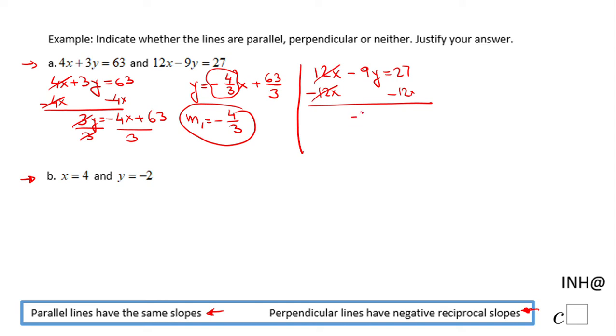Then I have negative 9y equals negative 12x plus 27, and obviously the last step here to solve for y is to divide by negative 9. We end up with the equation y equals negative 12 over negative 9x plus 27 over negative 9. Again, this coefficient, this number in front of x, is the slope.